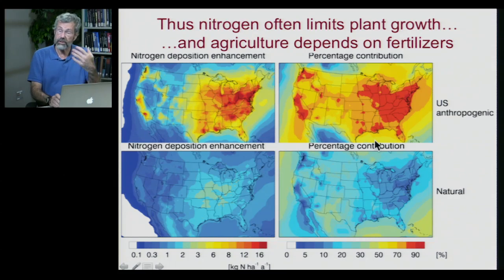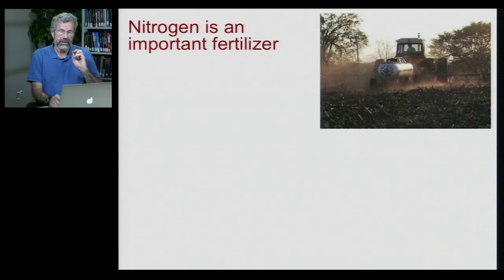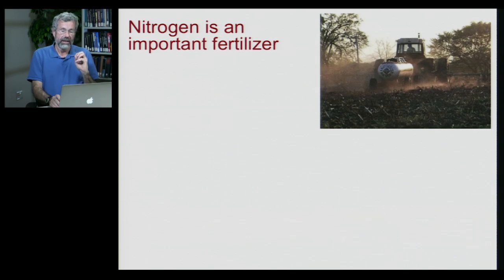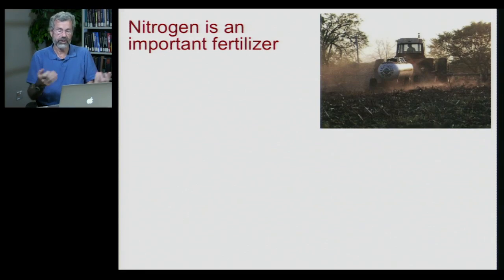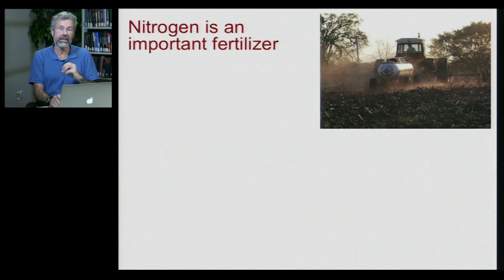We've been able to increase the productivity of our crops enormously by fertilizing them. Nitrogen is an almost essential fertilizer — it really increases plant production, because otherwise every plant has to wait for legumes and rhizobia to slowly convert nitrogen into ammonia. But if we add it ourselves and take that shortcut, we can rapidly increase productivity.